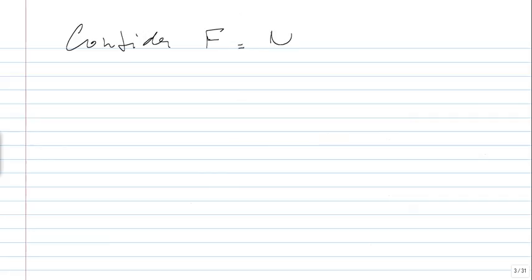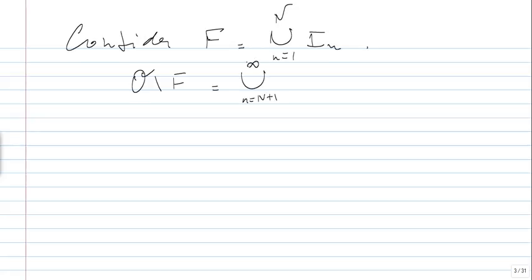We consider F to be the union of I_N from 1 to N, which is a finite union of open intervals. Then O minus F equals the union from N+1 to infinity of I_N. We know that the measure of O minus F is less than epsilon — that's how we chose capital N.